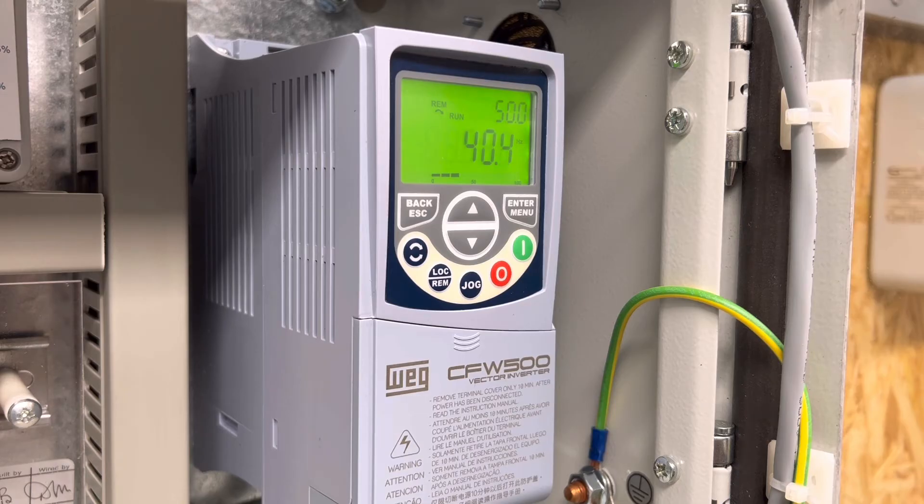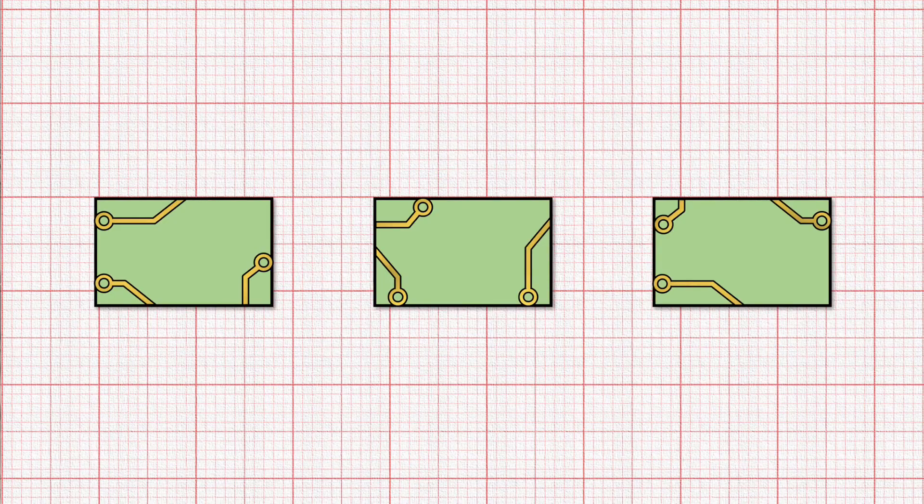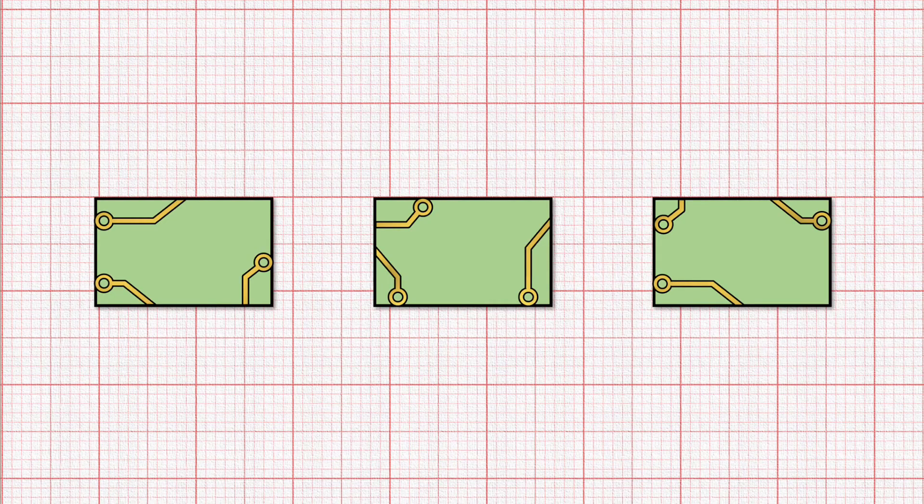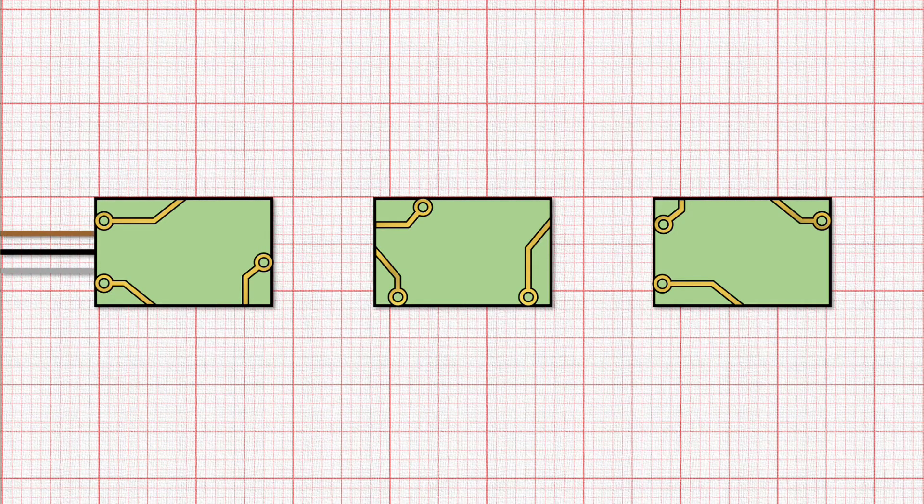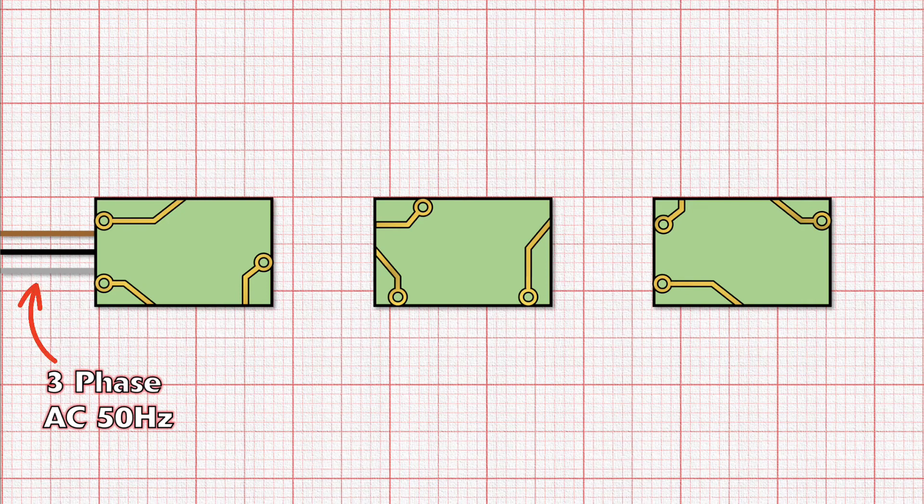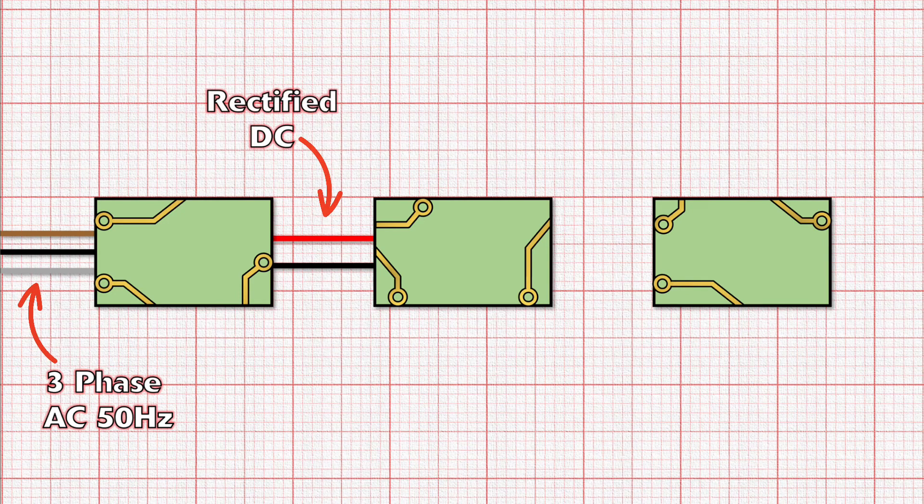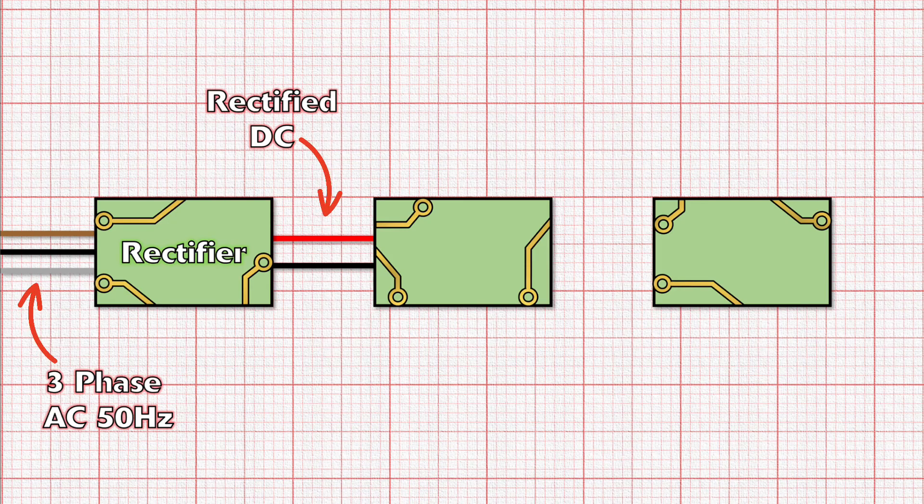We do that by means of a variable frequency drive or VFD. Now these work in what seems like quite a counterintuitive way, because the first thing that a variable frequency drive does is to take the three-phase AC power supply and convert it to DC using a device called a rectifier. The reason why it does this will become clear as we get further into the process of how a VFD works.